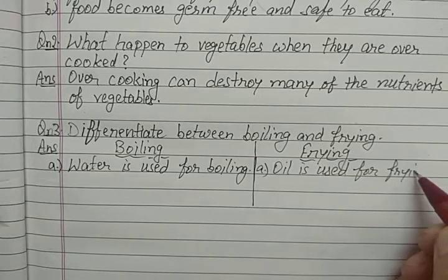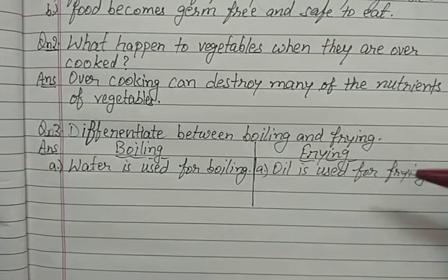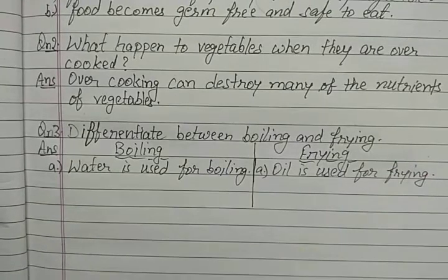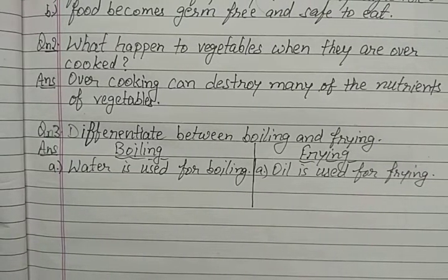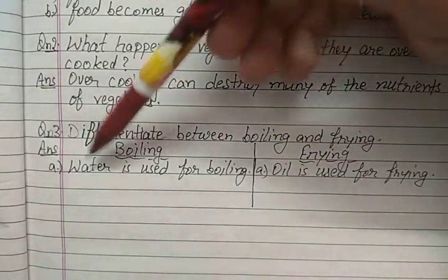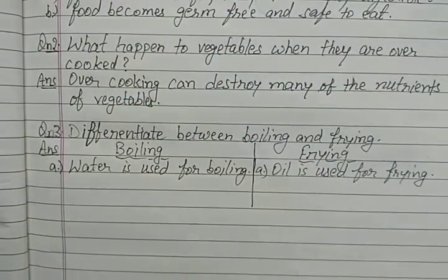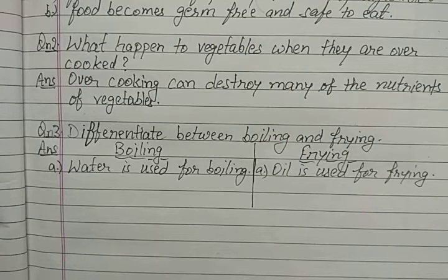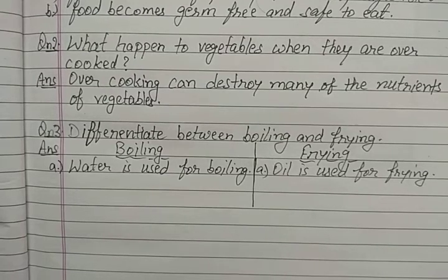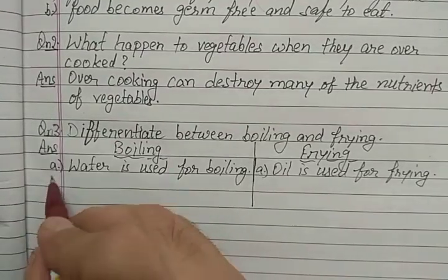This is the first difference. We don't use water in frying — we use only oil. And in case of boiling, we use water. This is the basic and main difference: water is used in boiling and oil is used in frying.